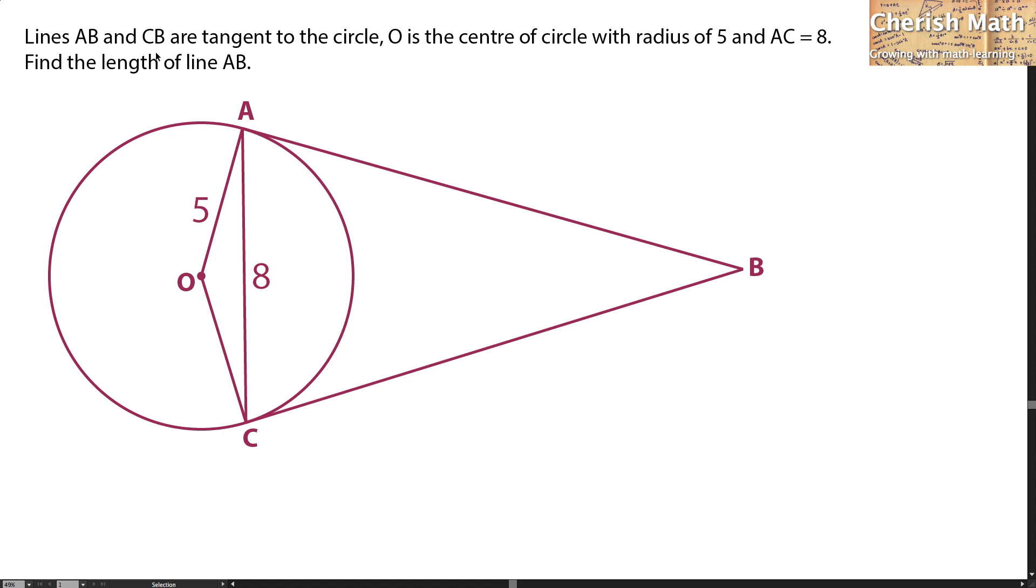Lines AB and CB are tangent to the circle. O is the center of the circle with radius 5 and AC equals 8. Find the length of line AB.